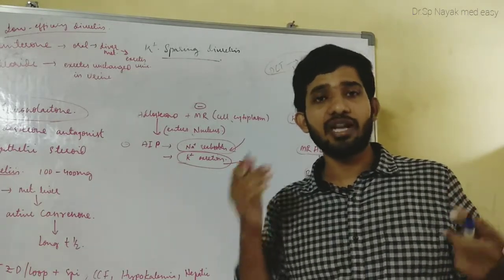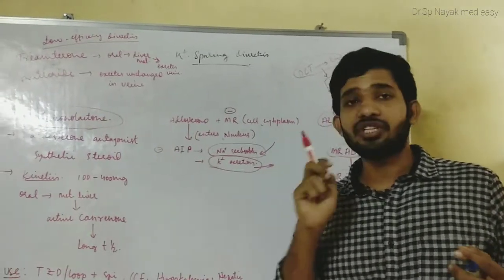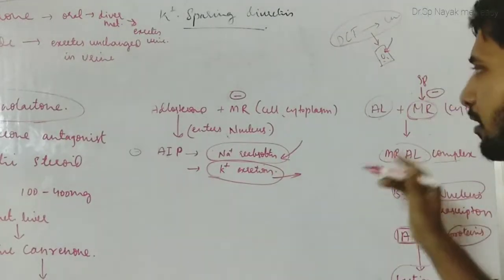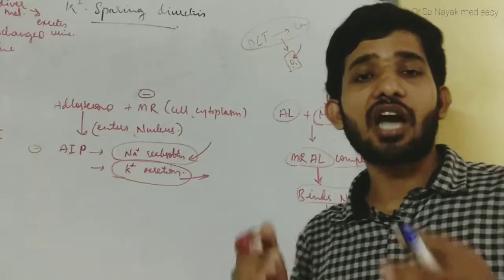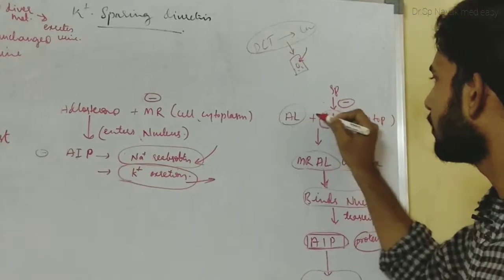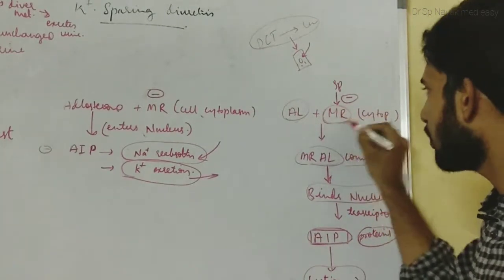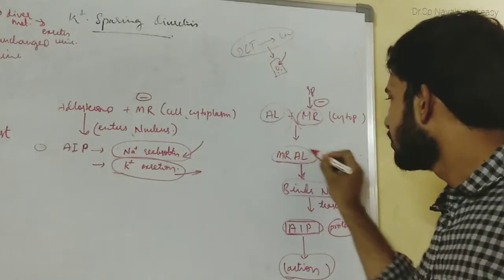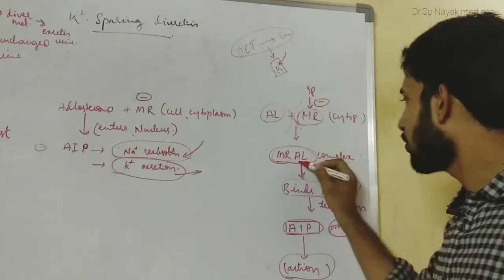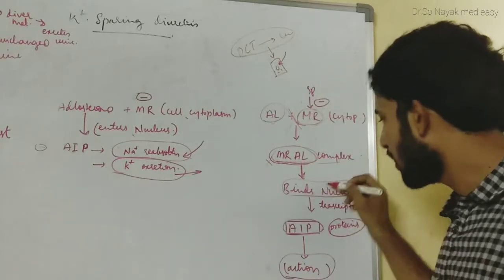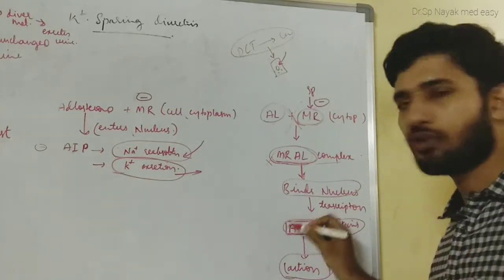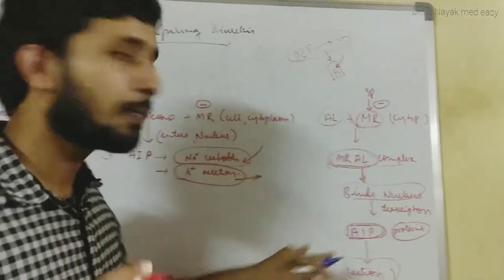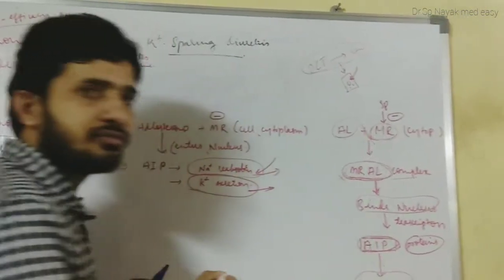Now let us discuss spironolactone, which is an aldosterone antagonist. It is a synthetic steroid whose structure is similar to aldosterone, which is a mineralocorticoid steroid. When spironolactone is given to the patient, it will competitively block the mineralocorticoid receptor. When aldosterone tries to combine with the mineralocorticoid receptor, spironolactone blocks it, stopping the synthesis of the mineralocorticoid-aldosterone complex. Therefore, it will not bind to the nucleus and will not form aldosterone-induced proteins. The opposite action occurs: spironolactone causes sodium excretion and potassium reabsorption.